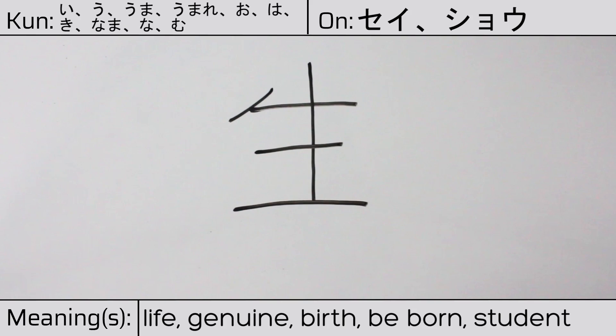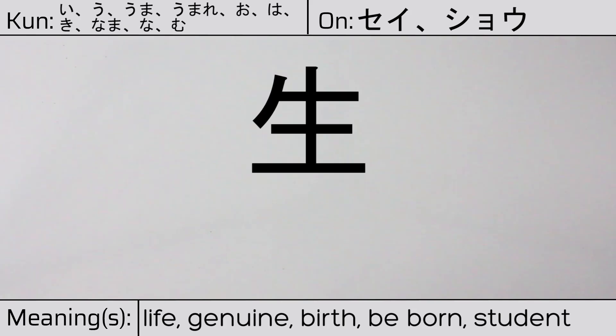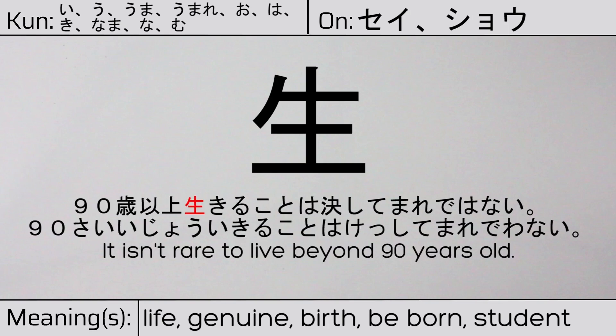Our example sentence is: It isn't rare to live beyond 90 years old.